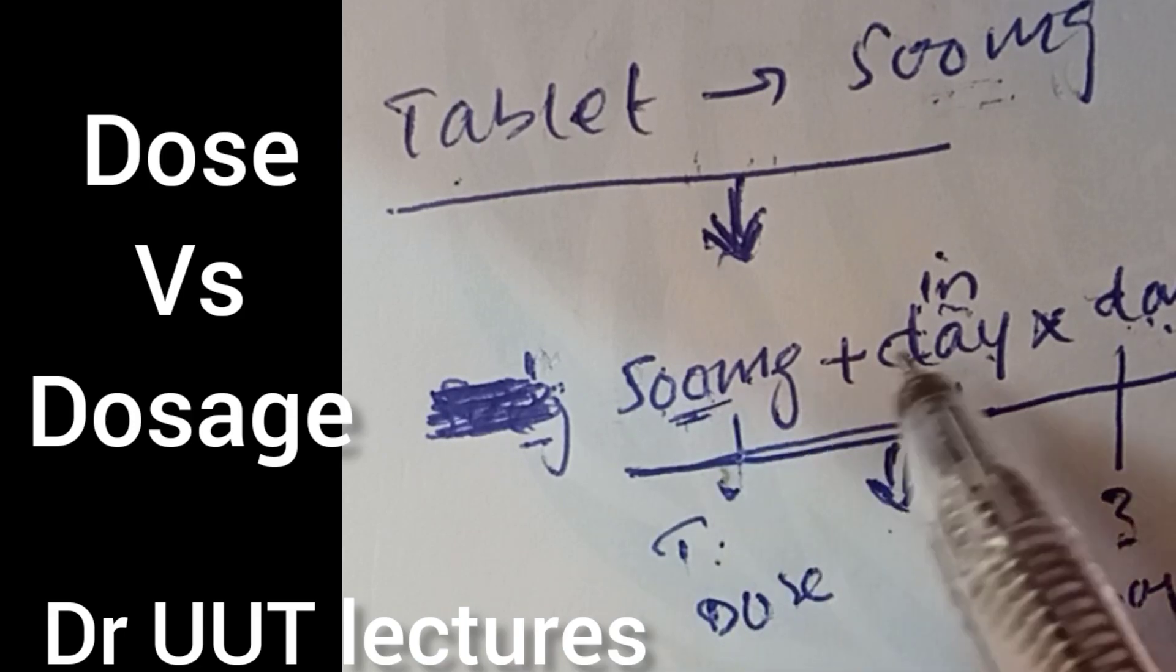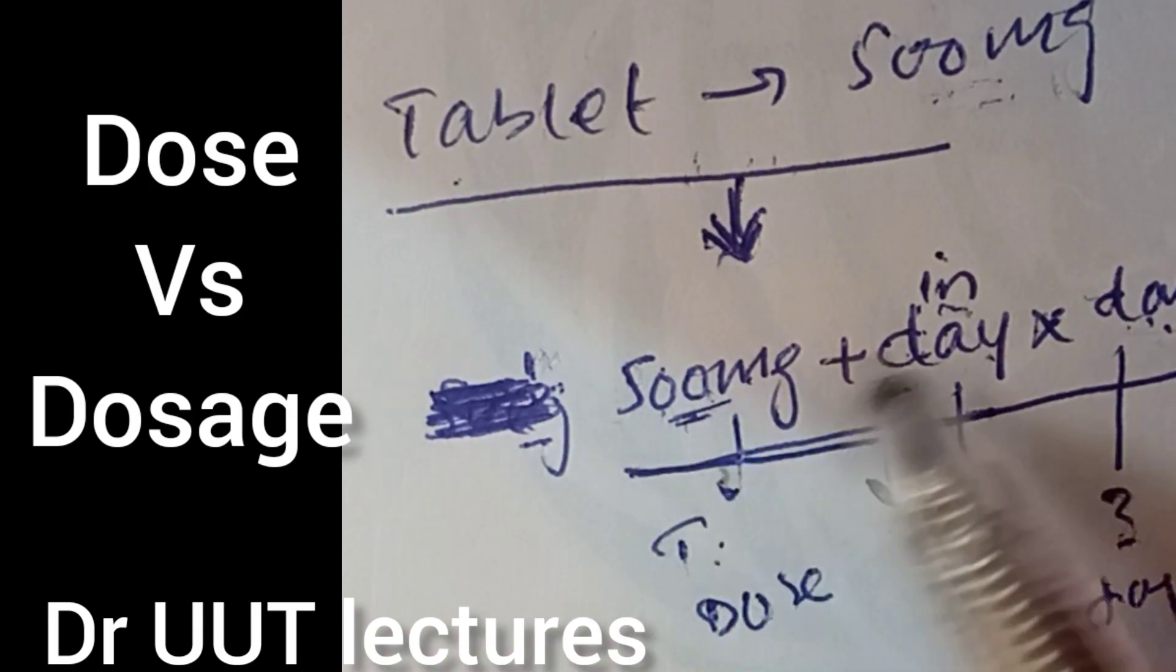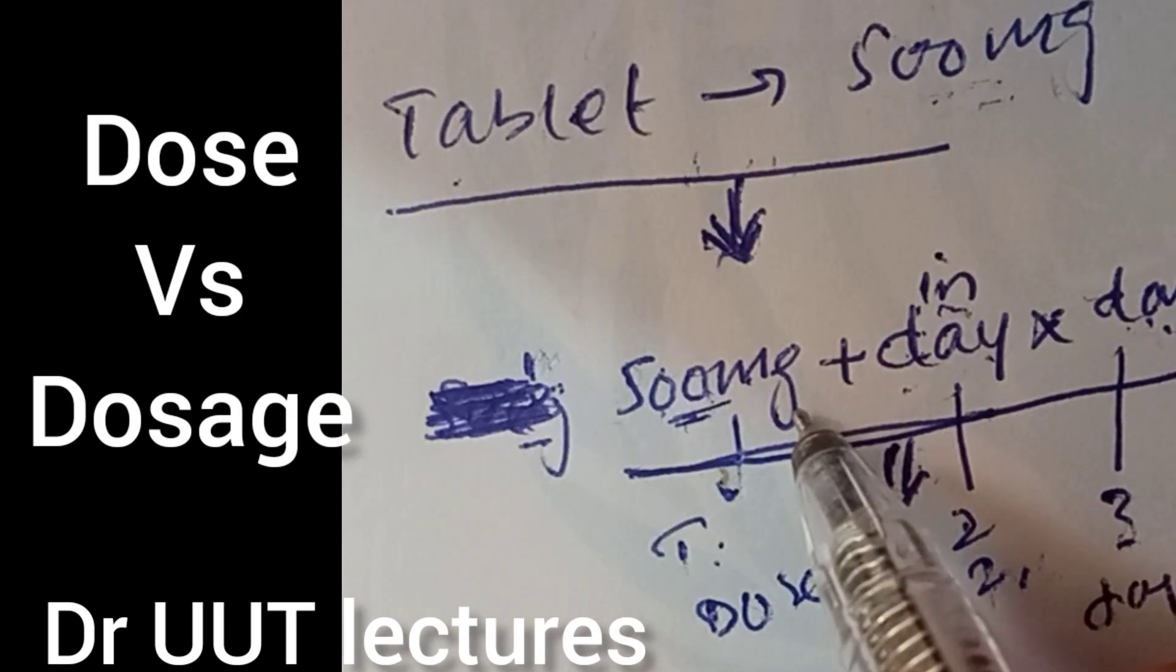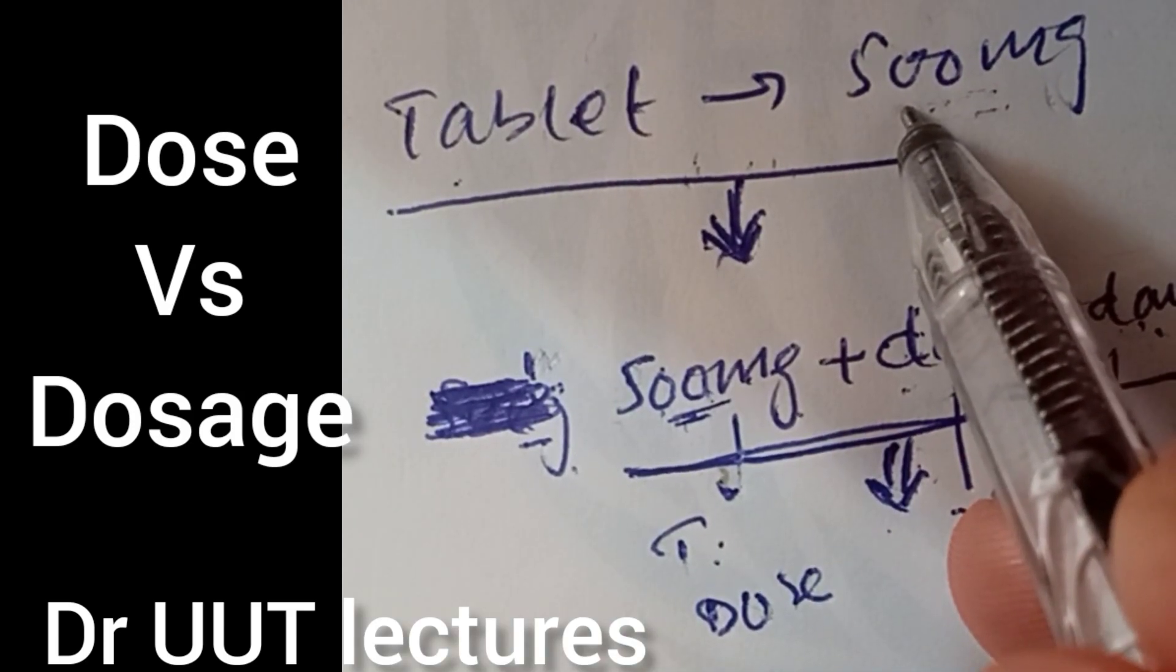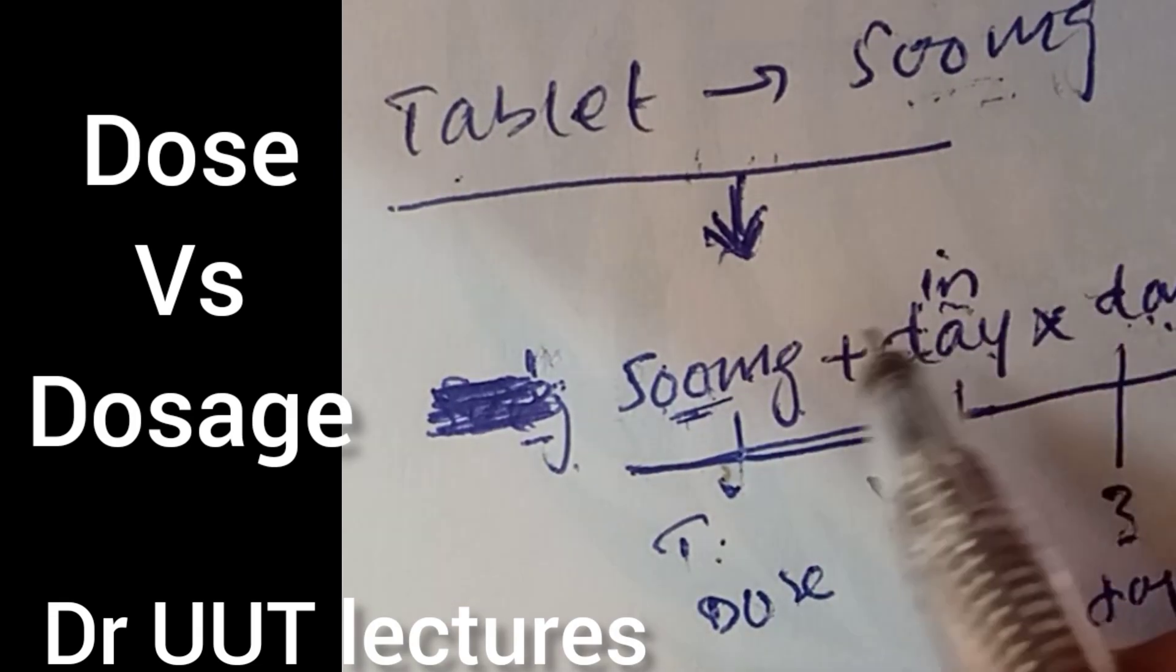When you're talking about the dose, the days, the frequency - if you talk about all these, then you're talking about dosage. If you're talking about just a specific time, you're talking about the dose. We take a dose at a specific time, and dosage is the entire therapy.